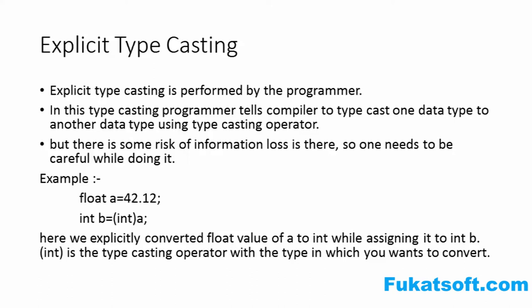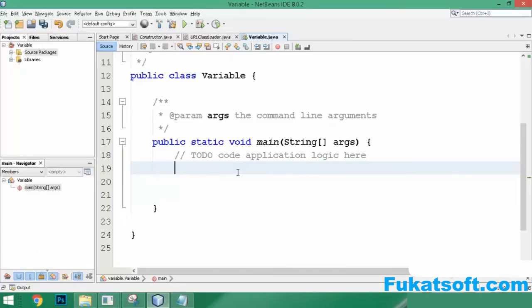Java will give us an error that 42.12 will not store in an integer. That's why we use an explicit typecasting operator. We write the target data type in parentheses before the value, so the value 42.12 is cast down and 42 is saved.